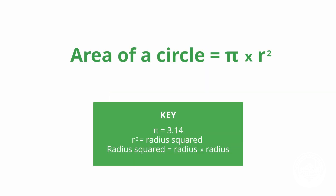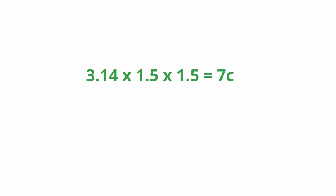Then we use the formula for the area of a circle, which is pi (3.14) times the radius squared. So we multiply 3.14 by 1.5 by 1.5 again. This equals 7 square centimetres. So 7 square centimetres is the trunk cross-sectional area.